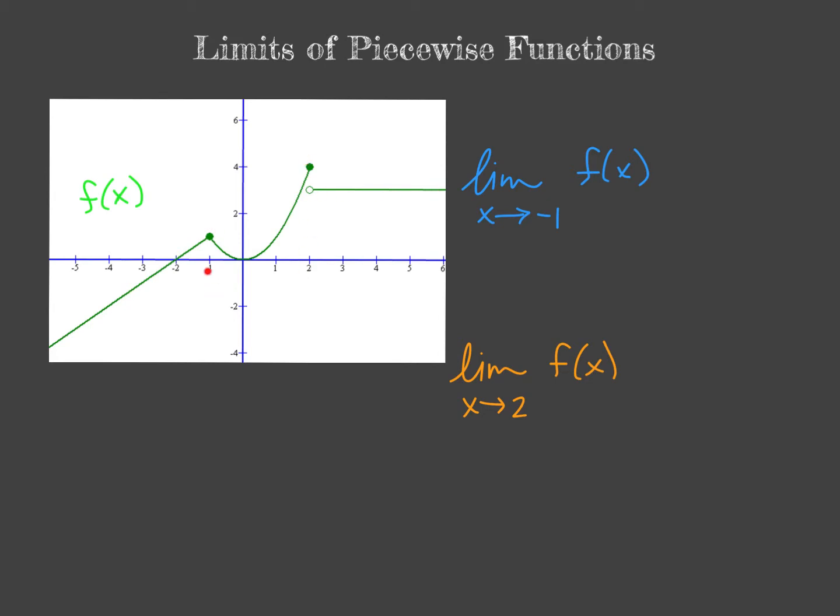You could argue is negative 1 really a breaking point. We can tell that the function is continuous here, meaning that there is no gap at negative 1. But over here at 2 we do have this jump discontinuity.